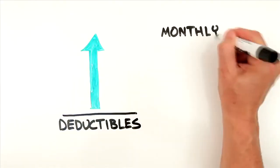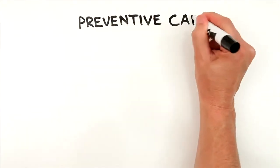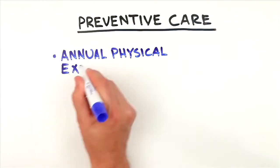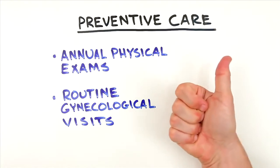Often, plans with higher deductibles have lower monthly premiums. The exception to deductibles is preventive care, like annual physical exams and routine gynecological visits with in-network doctors, which are covered by most plans even before meeting a deductible.